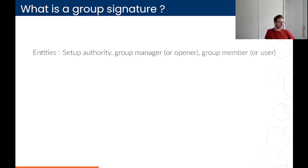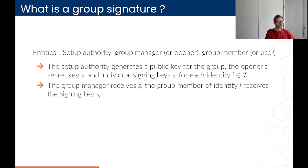Now, what a group signature is. In a group signature, you have three entities: the setup authority, the group manager (sometimes called the opener), and some group members (called users or signers). Every group member has an identity I in a set calligraphic I. The setup authority generates a public key for the whole group and the opener secret key. Then, for every identity, the setup authority generates a signing key S_I. The opener gets his opener key, and every group member of identity I receives the signing key S_I.